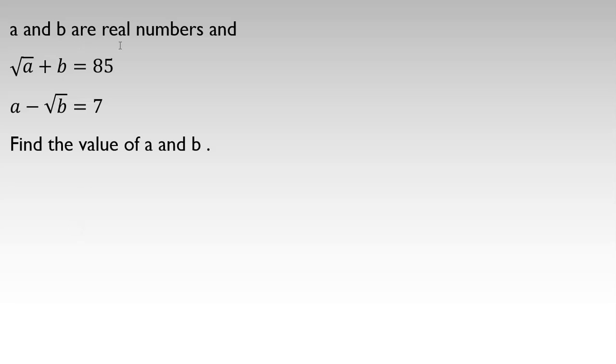a and b are real numbers and square root of a plus b equals 85, and a minus square root of b is 7. Find the value of a and b.